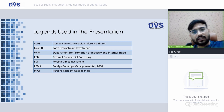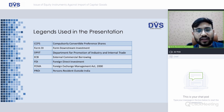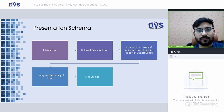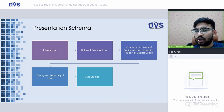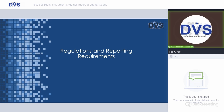Key abbreviations: CCPs refers to Compulsory Convertible Preferences; Form DI refers to Form Downstream Investment; DPIIT is the Department for Promotion of Industry and Internal Trade; ECB is External Commercial Borrowing; FDI is Foreign Direct Investment; FEMA is the Foreign Exchange Management Act 2000; PROI is a Person Resident Outside India. The session agenda covers: introduction, relevant rules for issue against imports, conditions for issue, timing and reporting, and practical case studies.